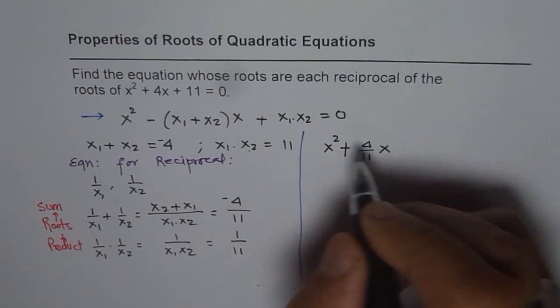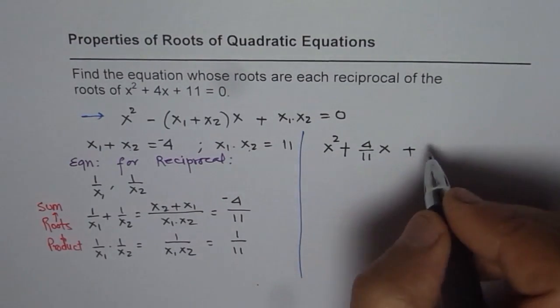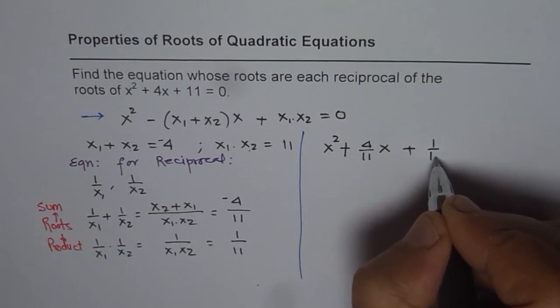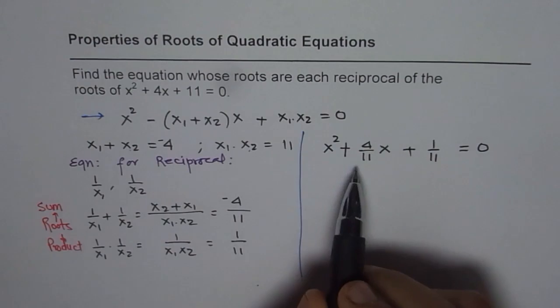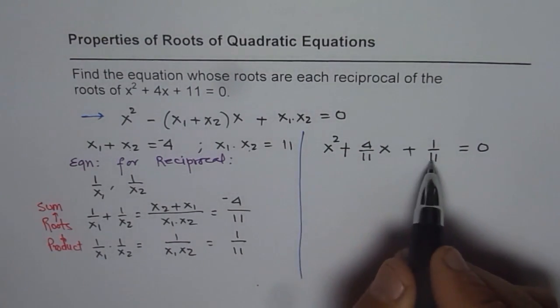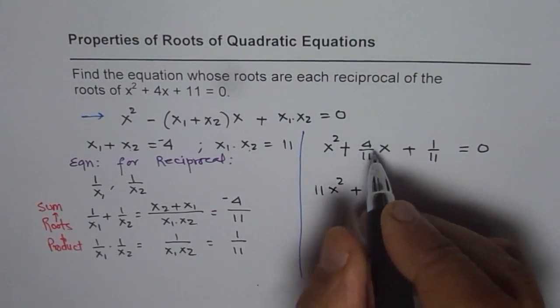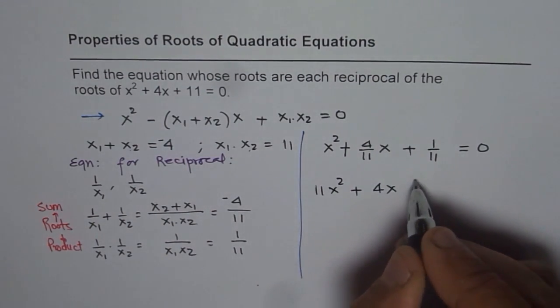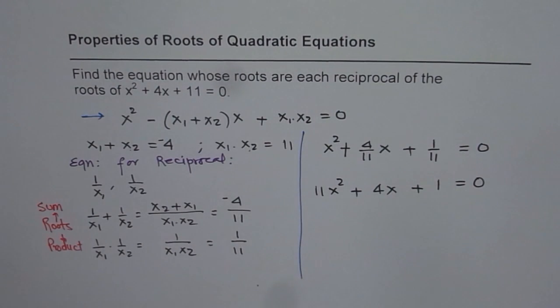And then the later half is the product of the roots. So product is 1/11. It is always good practice to write it as an integer. So we will multiply all by 11. We get 11x² + 4x + 1 = 0. So that is our answer.